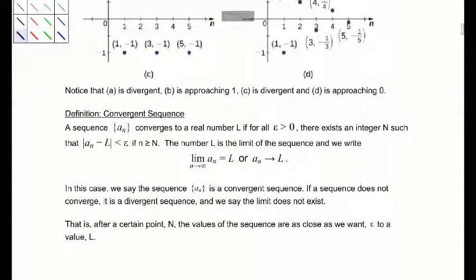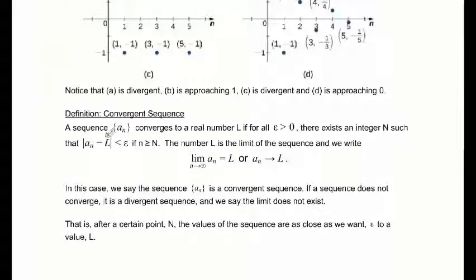Here is the formal definition of a convergent sequence — this should look familiar from limits in Calculus 1. A sequence a sub n converges to a real number l if, for all epsilon greater than 0, there exists an integer N such that the absolute value of a sub n minus l is less than epsilon whenever n is greater than or equal to capital N. The idea is that after a certain point N, the values of the sequence are as close as we want — that is, epsilon — to the value l.